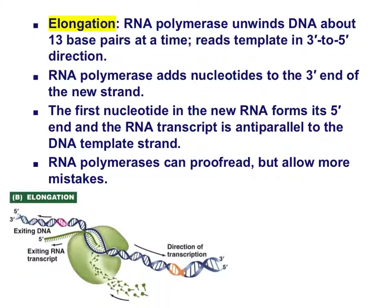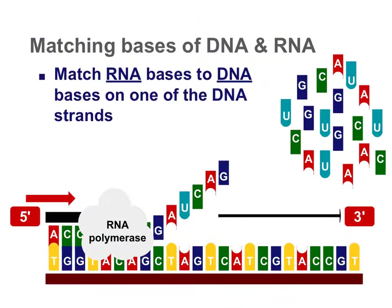Much like replication, elongation is the building of the mRNA sequence. The template strand of DNA is read in a 3' to 5' direction, because nucleotides are added to the 3' end of the new strand. The 3' end of the growing mRNA strand is where new nucleotides continue to be added. This process results in an RNA transcript that is anti-parallel to the DNA template strand.